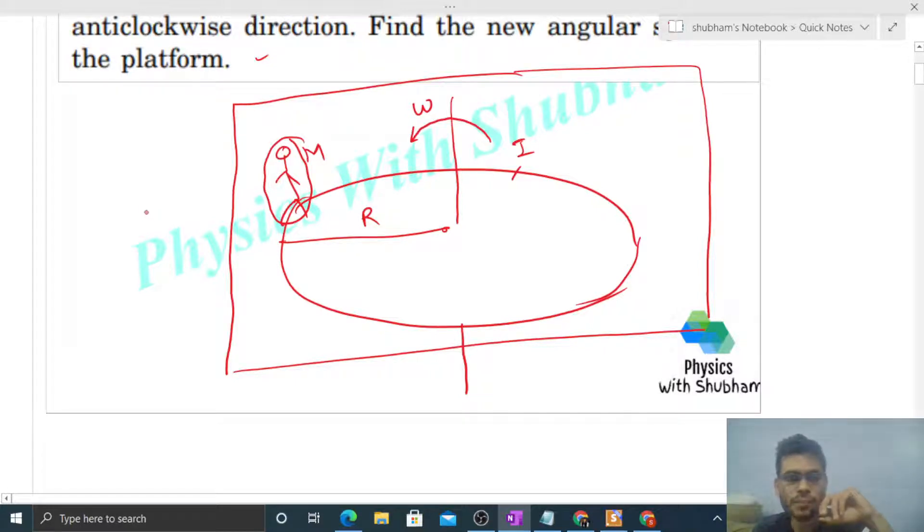We can say that because the net external torque acting on the system is zero, we can conserve the angular momentum of the system. If we talk about the initial angular momentum, it will be I plus capital M into R square into omega.